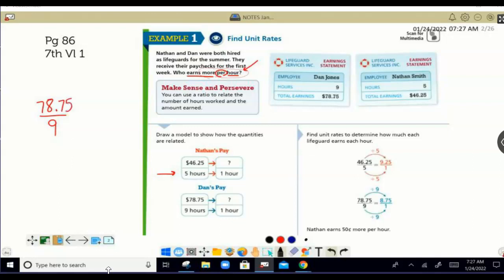So he makes $78.75 for nine hours. This is our setup. We want to just know how much for one hour. And then when we would solve that proportion, you can divide by nine and divide by nine to find our amount.